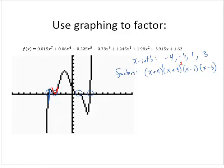At x = 1, the curve appears to flatten out, which tells us that's a zero of multiplicity 3.